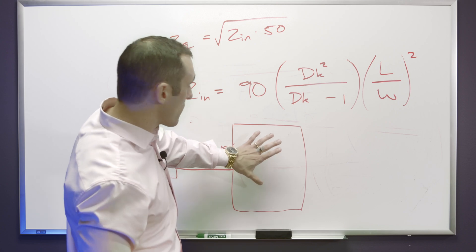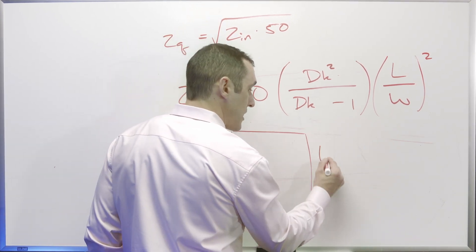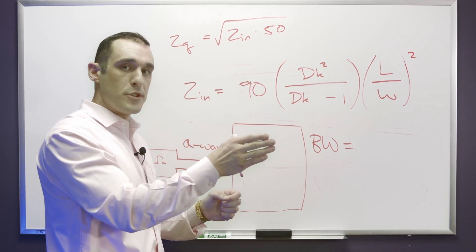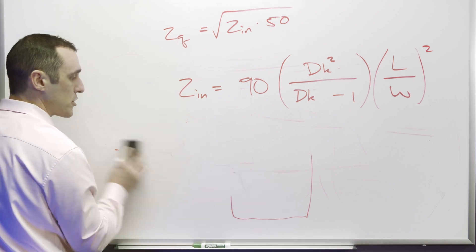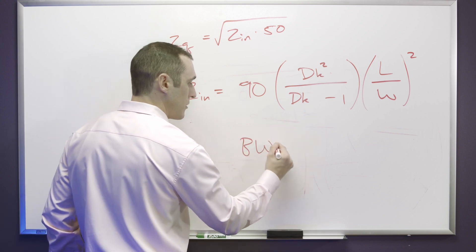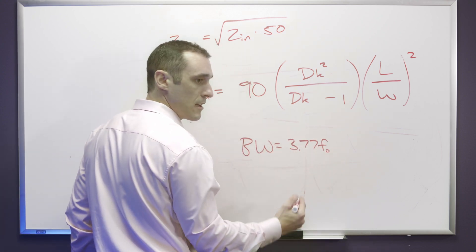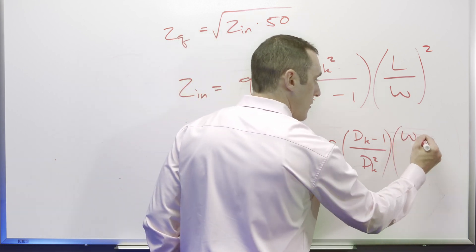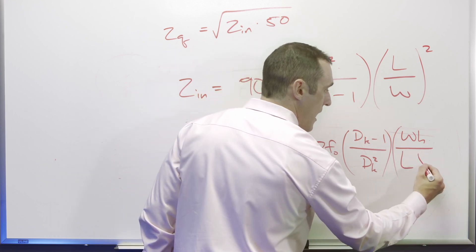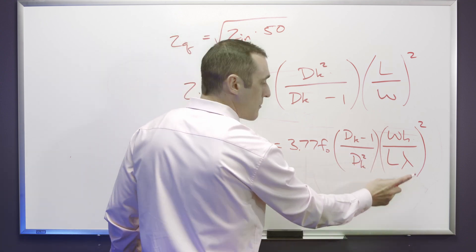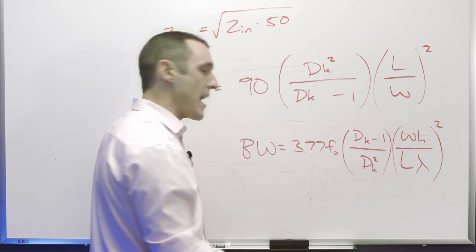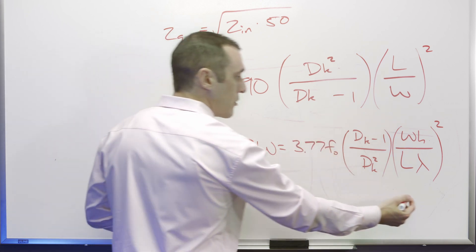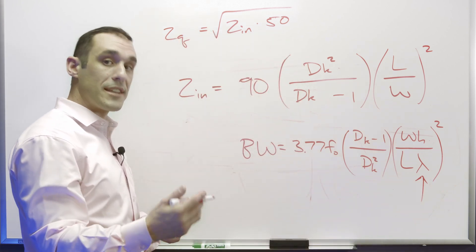We can also calculate a bandwidth for the patch antenna — essentially the range of frequencies it can broadcast at with minimal deviation from the carrier frequency. The bandwidth BW equals 3.77 times the frequency, times (H over DK) inverted, times the ratio of patch dimensions (W over L), divided by lambda — where lambda is the free-space wavelength calculated from the operating frequency and the speed of light.